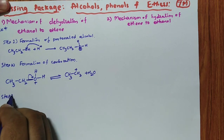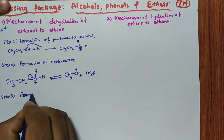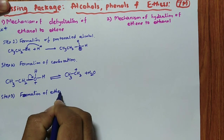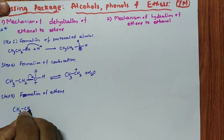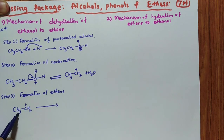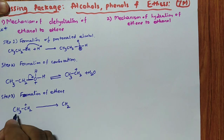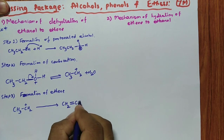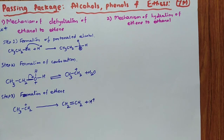Next step 3 — formation of ethene. From the carbocation CH3CH2+, a proton is removed, and you get ethene. So ethanol to ethene — observe and you practice this mechanism. 99% you will get this mechanism in the exam.